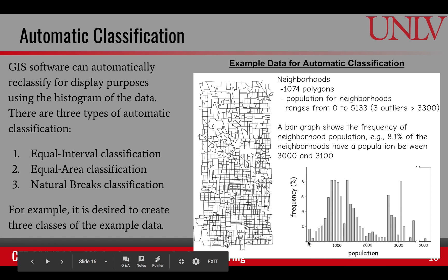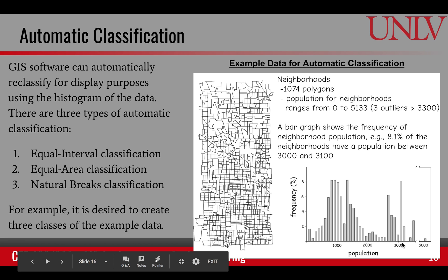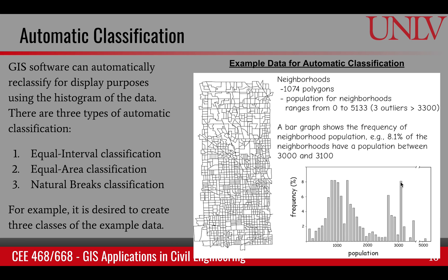In this case, the attribute is population. It creates many bins of the variable and fits in the frequency of that value. For example, between 3,000 and 3,100, the value is 8.1% — that's the frequency. There are three types of automatic classifications: equal interval classification, equal area classification, and natural breaks classification. You can see all of these different criteria in the ArcMap symbology tab.